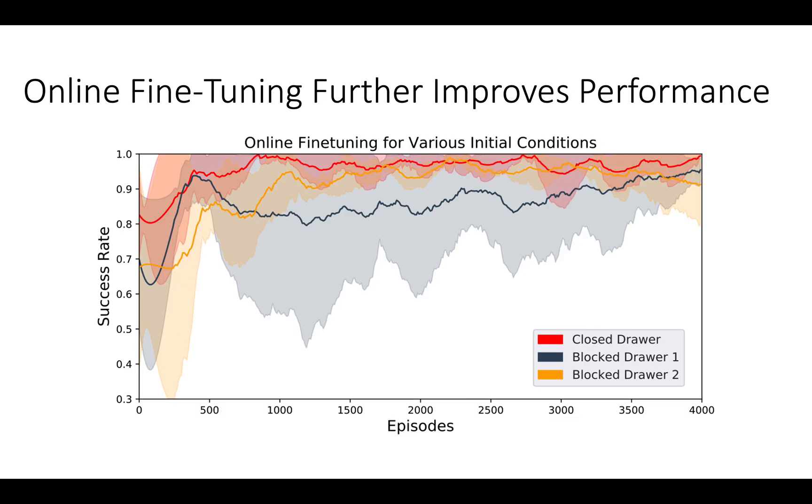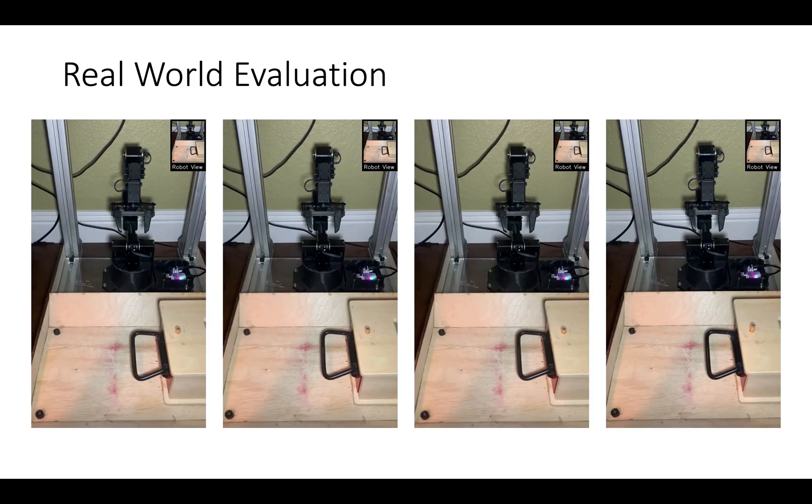While we were able to obtain success rates of around 70% from offline training alone, our method is also amenable to online fine-tuning. We see that for all of the novel initial conditions for the drawer task, the fine-tuned policy is able to achieve a success rate of over 90%.